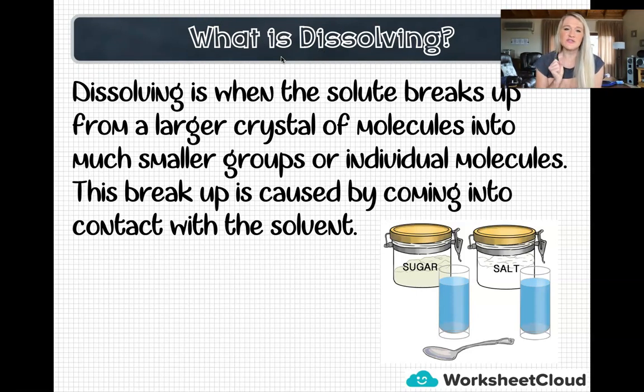So the definition of dissolving is that it is when a solute breaks up from a larger crystal of molecules into much smaller groups or individual molecules. This breakup is caused by coming into contact with the solvent.